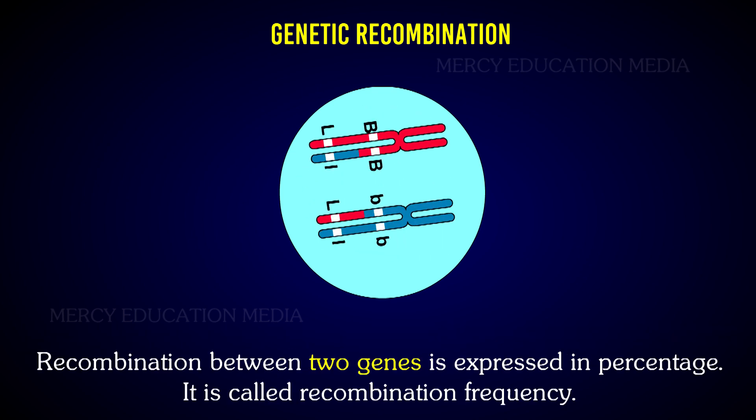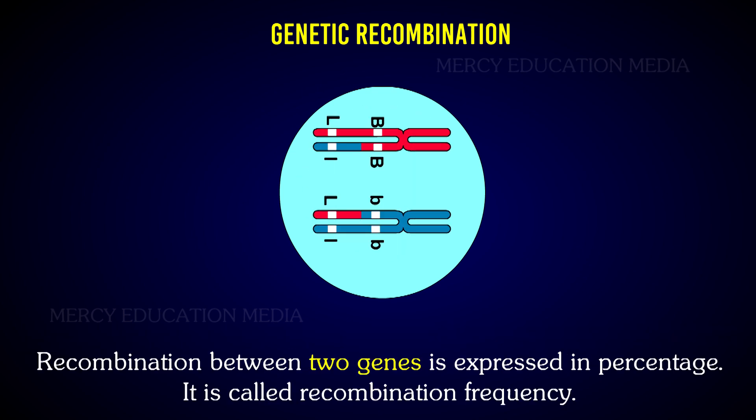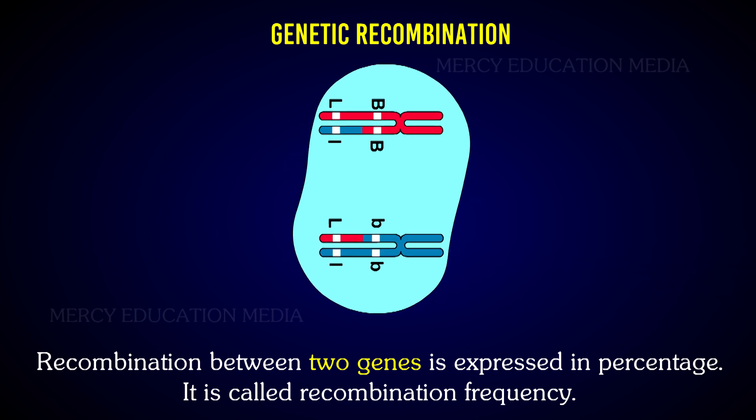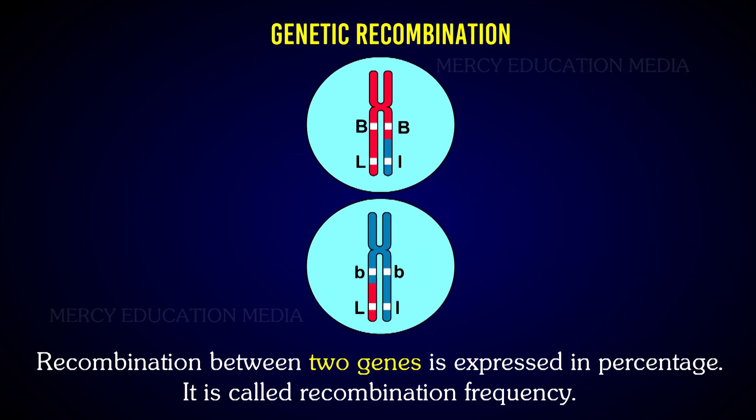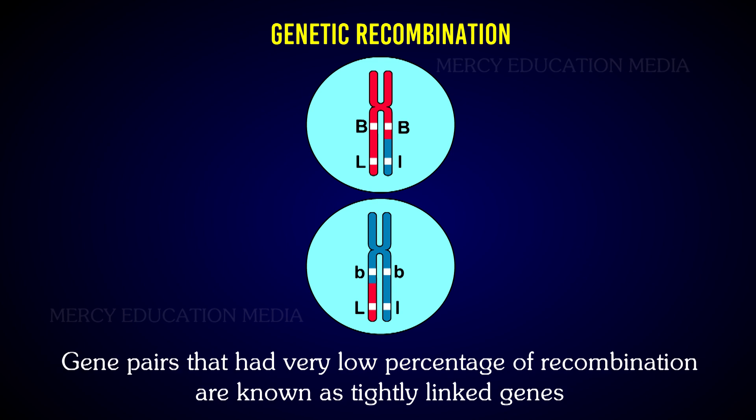Recombination between two genes is expressed in percentage, and it is called recombination frequency. The gene pairs that had very low percentage of recombination are known as tightly linked genes.